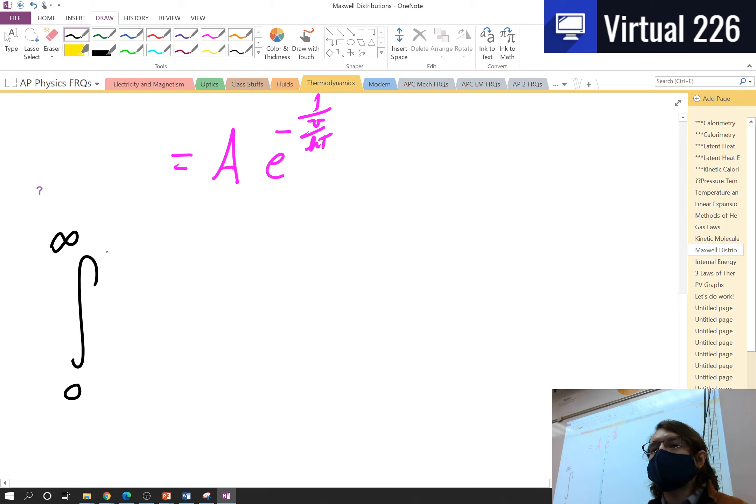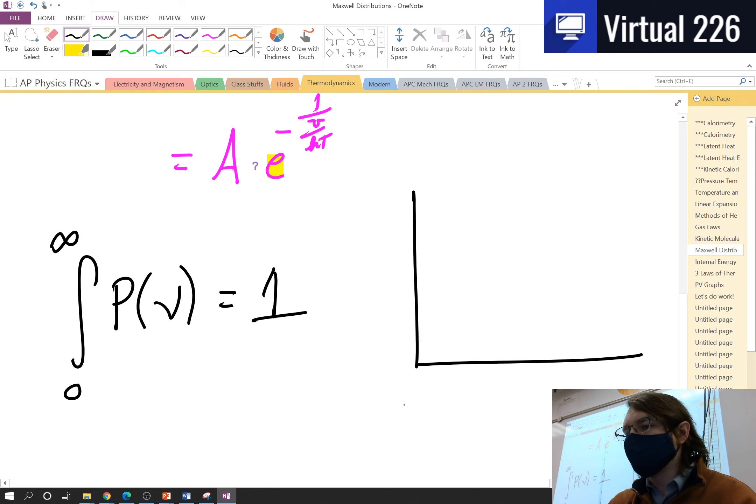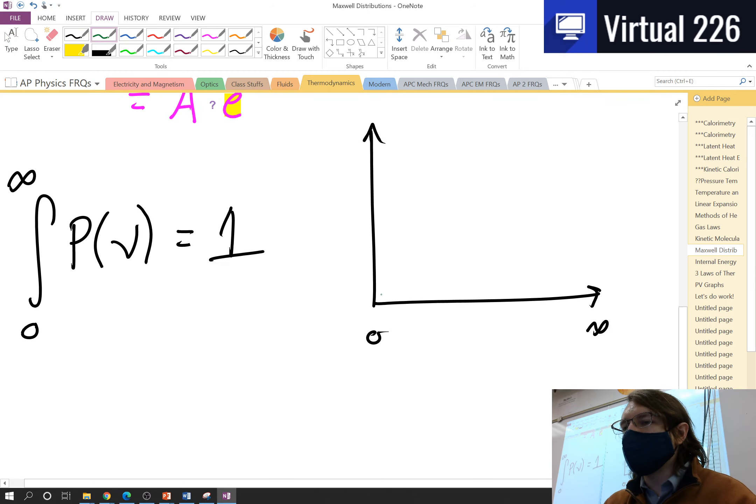If we take a look at what is the probability for some speed to be between zero and infinity - well, the particle's either not moving or it's moving. That would be one. That is the entire function. If we took a look at the area under this curve, we're going from zero to infinity and we're looking at speeds. This probability function would probably look something like this.